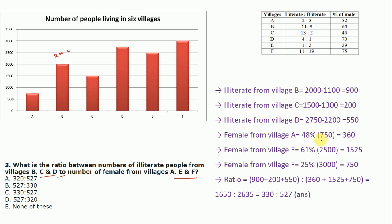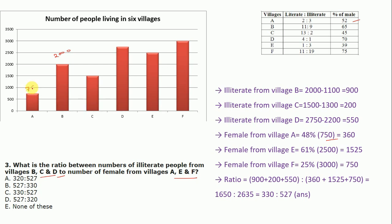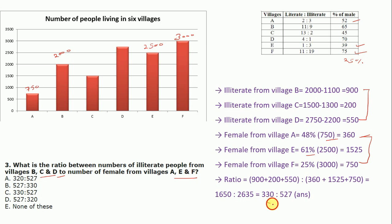Females from village A = 48% of 750 = 360 (since 52% are male). Females from village E = 61% of 2500 = 1525 (since 39% are male). Females from village F = 25% of 3000 = 750 (since 75% are male). So the ratio = (900 + 200 + 550) : (360 + 1525 + 750) = 1650 : 2635, which simplifies to 330 : 527. So option C is correct.